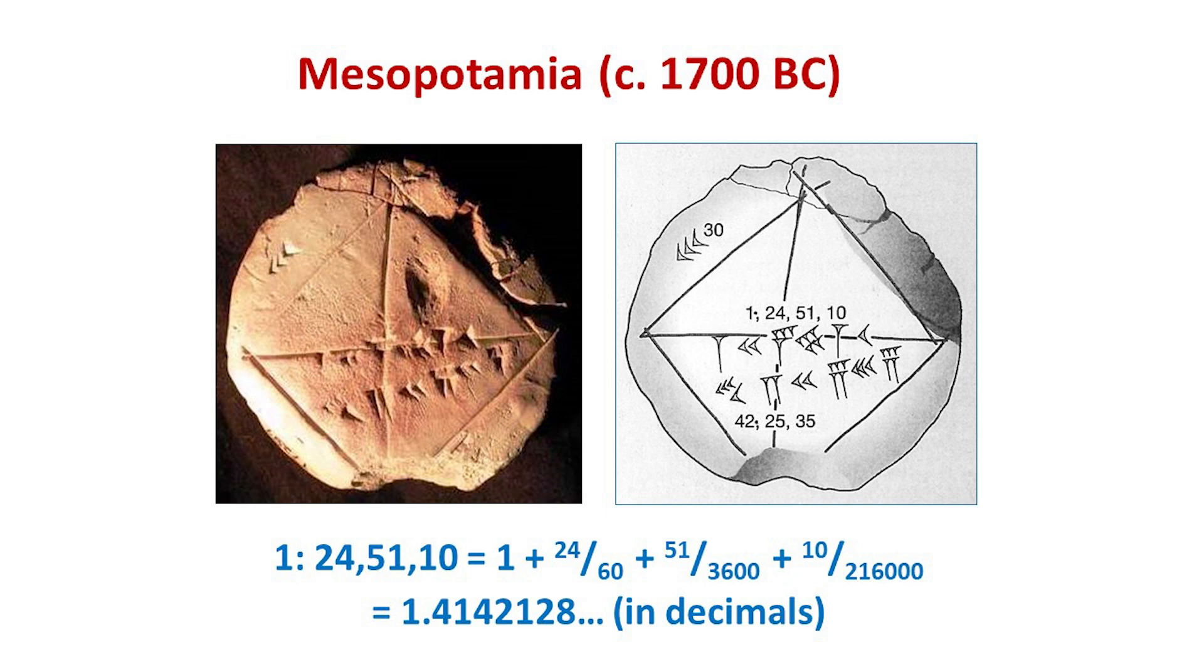Their value for the square root of 2 appears across the middle as the base 60 number 1, 24, 51, 10, which equals 1 + 24/60 + 51/3600 + 10/216000, which in decimals is correct to an amazing 5 decimal places.